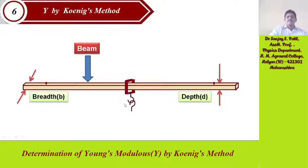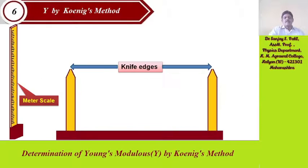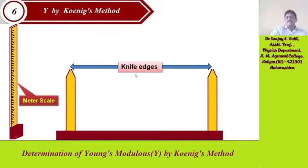In this experiment we are specifically using a beam with breadth B and depth D. The breadth B is to be found using a vernier caliper or screw gauge micrometer. This is to be noted.